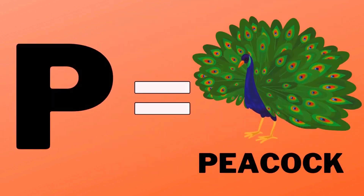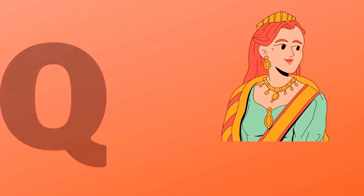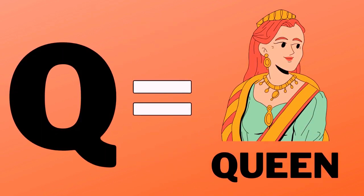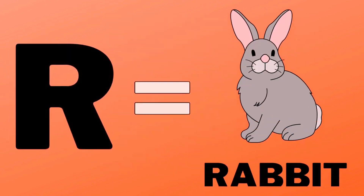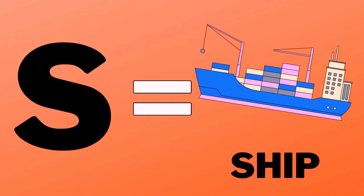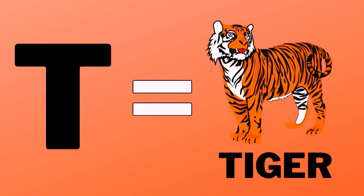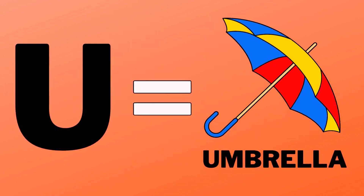P for peacock, Q for queen, R for rabbit, S for ship, T for tiger, U for umbrella.